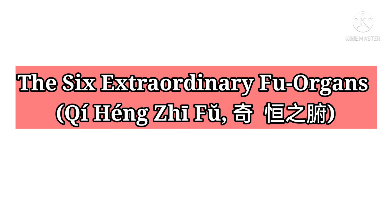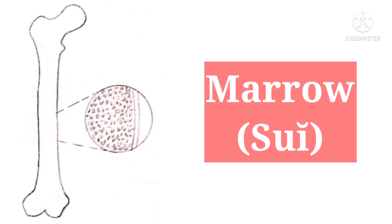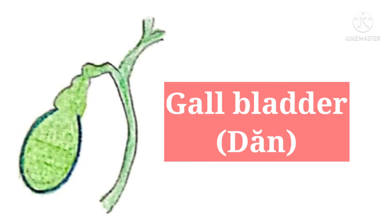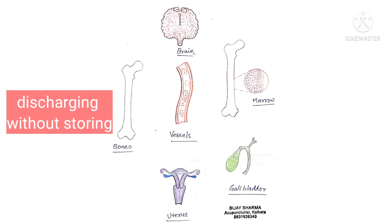The six extraordinary Fu organs are brain, marrow, bone, vessels, uterus, and gallbladder. These are different from the five Jiang and six Fu organs. The six extraordinary Fu organs are hollow by nature, often in the form of tubes or pouches, and are described as discharging without storing.